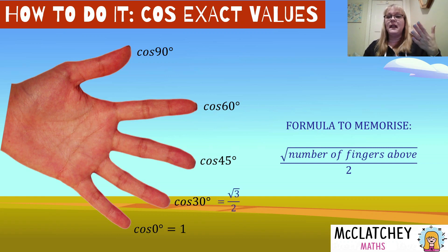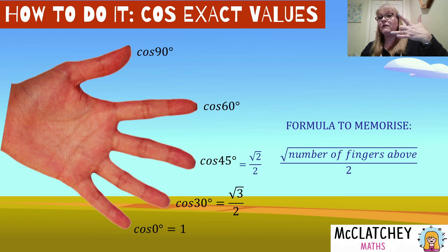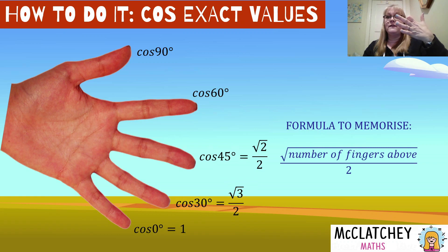Okay, cosine of 30. Once again, number of fingers above that one there, if I hold that one in, I've got three fingers available above, square root of that is root three divided by two. So it's just root three over two. Middle finger, number of fingers above is two, so I've got square root of two over two again. And then cosine of 60. I've got one finger above, which is thumb, so that's going to be square root of one over two, which is a half.